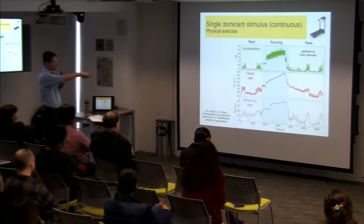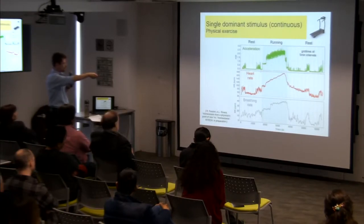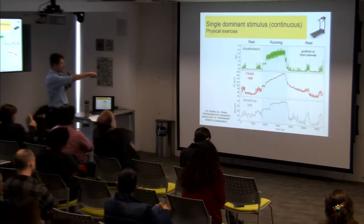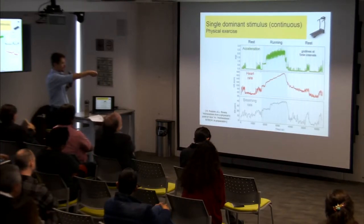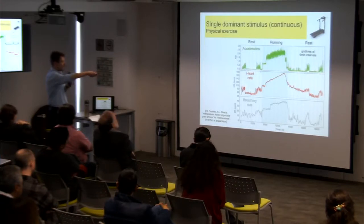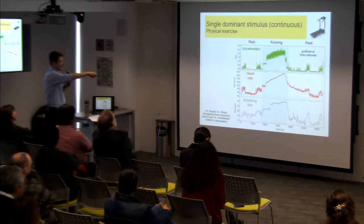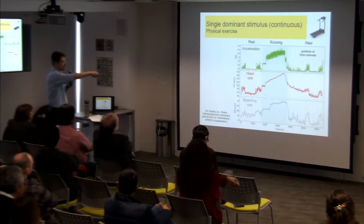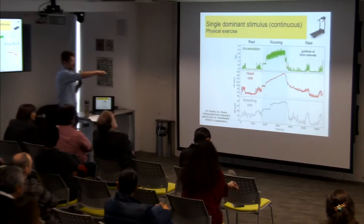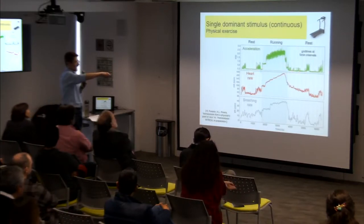Here we have a time series of about half an hour running. The grid lines are at five-minute intervals. Here the subject is in rest, walking in the house, lying supine, walking in the house. Here he starts to run, then resting, sitting down, walking in the house, lying down.